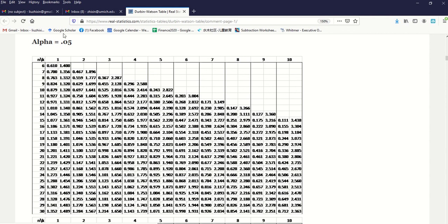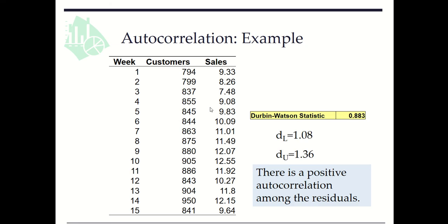Assuming alpha level of significance is 0.05, we can locate the values here. Then we can calculate the Durbin-Watson statistic from PHStat. The value is 0.883, less than dL. So at α = 0.05, there is a positive autocorrelation among the residuals.